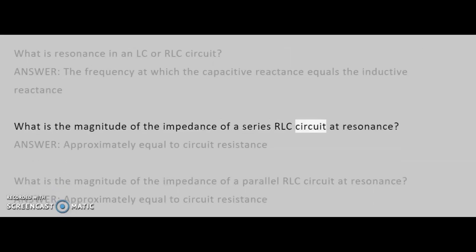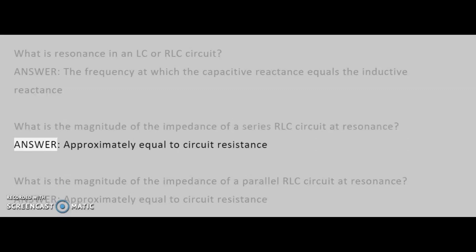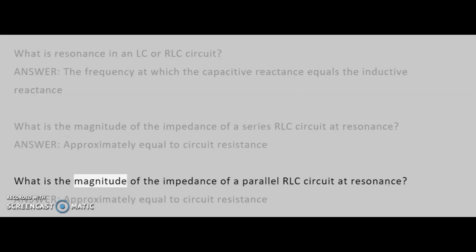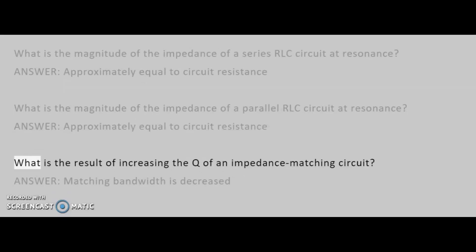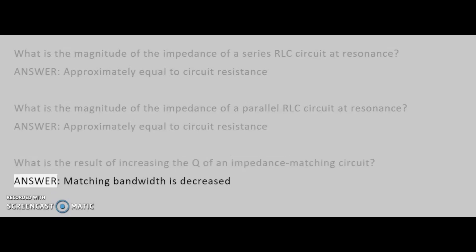What is the magnitude of the impedance of a series RLC circuit at resonance? Answer: Approximately equal to circuit resistance. What is the magnitude of the impedance of a parallel RLC circuit at resonance? Answer: Approximately equal to circuit resistance. What is the result of increasing the Q of an impedance matching circuit? Answer: Matching bandwidth is decreased.